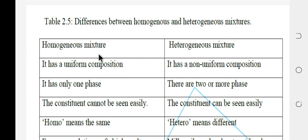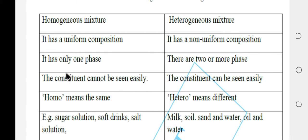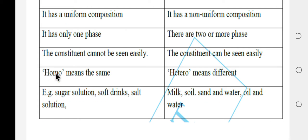The difference between homogeneous and heterogeneous mixtures: a homogeneous mixture has uniform composition, while a heterogeneous mixture has no uniform composition. A homogeneous mixture has only one phase, while a heterogeneous mixture has two or more phases. The components of a homogeneous mixture cannot be seen easily, while those of a heterogeneous mixture can be seen easily. 'Homo' means same; 'hetero' means different.